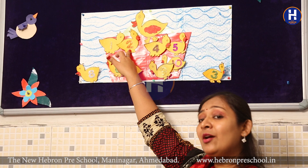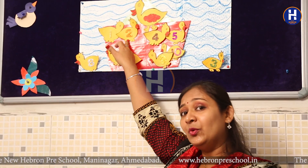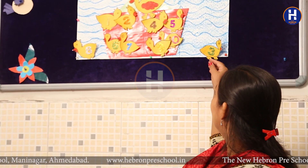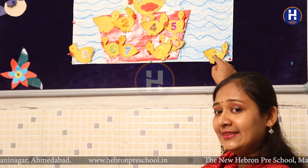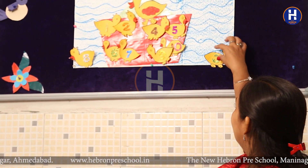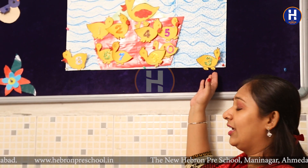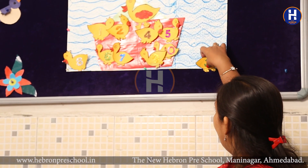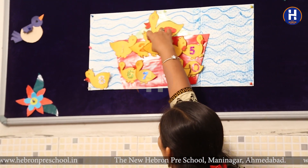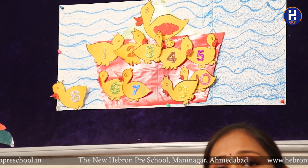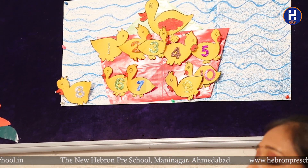Why was number three missing? What number comes after two? Kaunsa number two ke baad aata hai? Yes, it is number three! She looked here and there again and saw the duck on the right side of the river — usne dekha ke woh duck right side pe thi river ke. She brought the duck back and put it at the proper place.